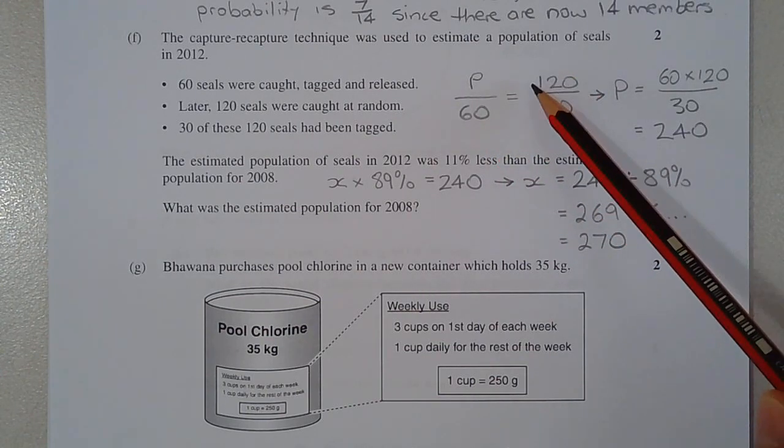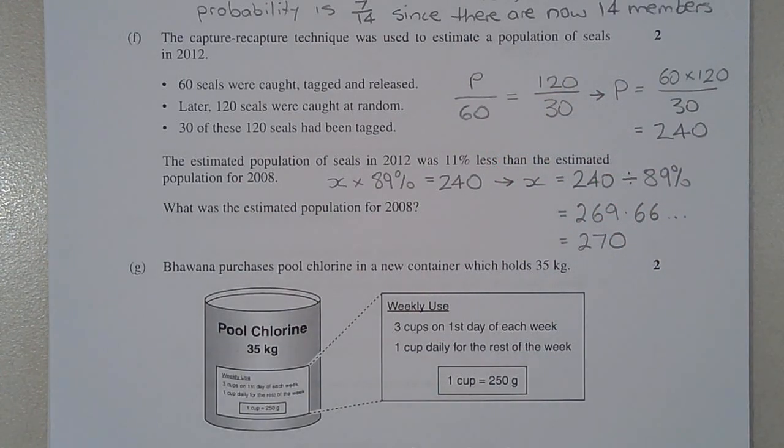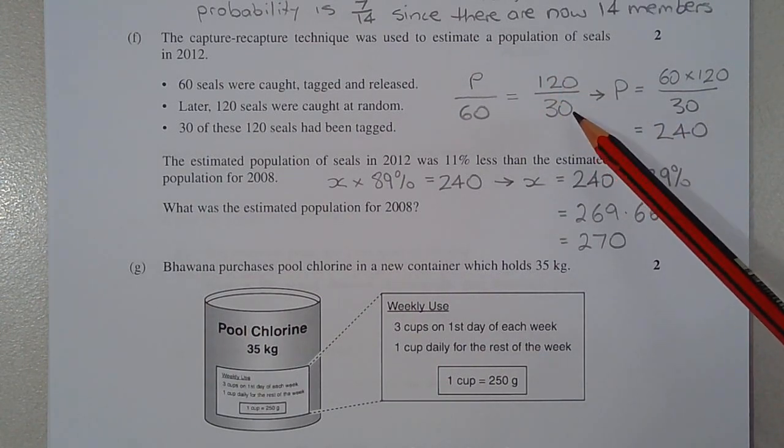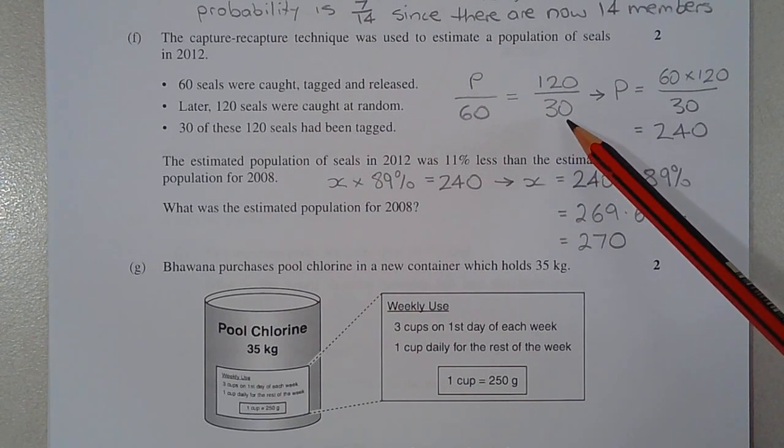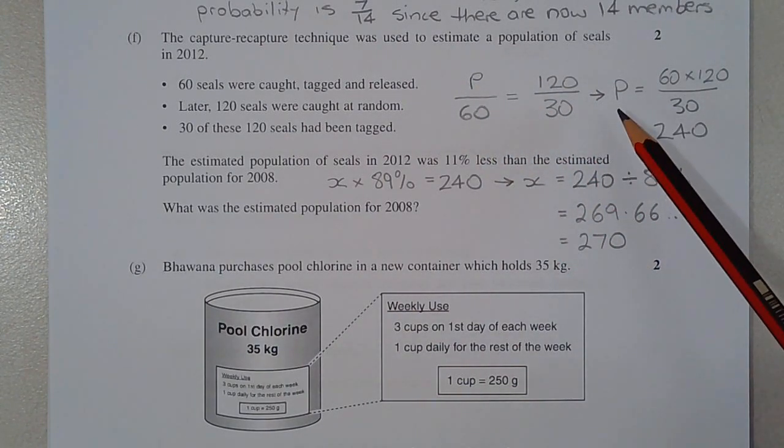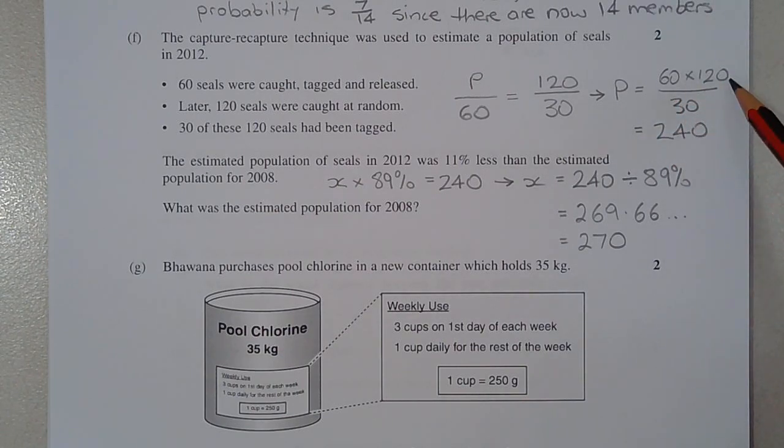is equal to the number of seals that were caught the second time around, so this is the recapture part, over the number of seals of the 120 that were tagged. Now solving for P, multiplying both sides by 60, P is equal to 60 multiplied by 120 over 30, which equals 240 seals.